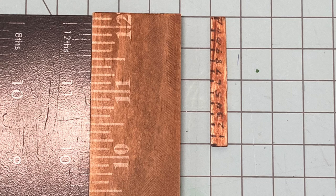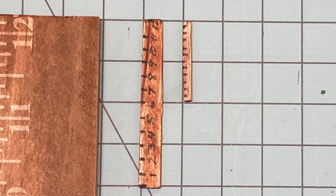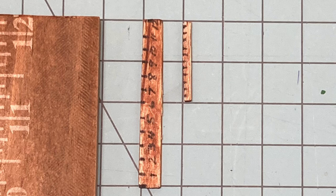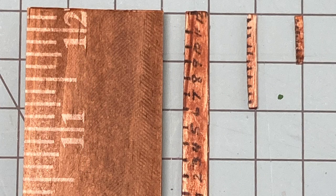1/12th scale is commonly used for traditional dollhouse measurements. One-twelfth means for every one foot in real life, it's one inch in the dollhouse. Finally, 1/24th scale is another common scale for dollhouses. One twenty-fourth means that for every one foot in real life, it's a half an inch in this scale.